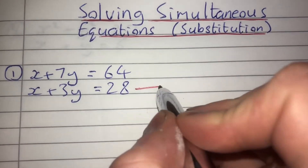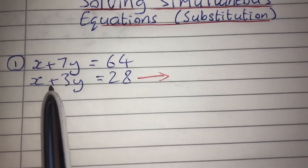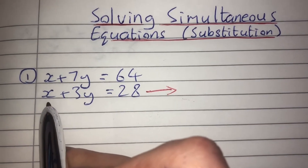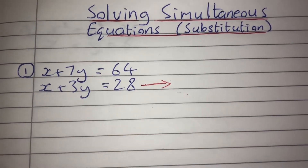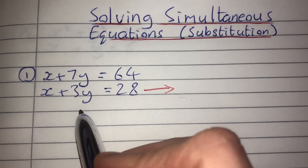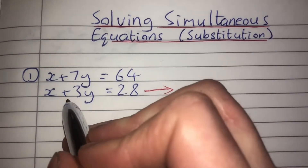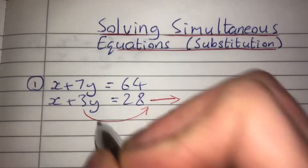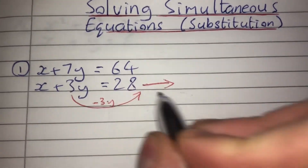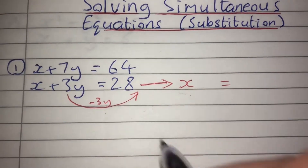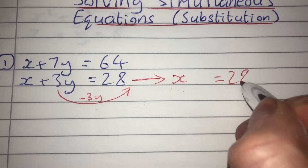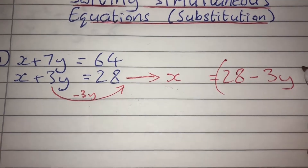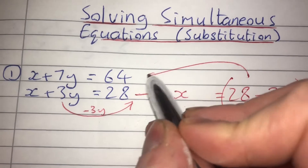When solving through substitution, we take one of the equations and make x or y the subject. I'm going to take the second equation and make x the subject because it's incredibly easy to do. If you're a little shaky on making a term the subject of an equation, there's a video you can watch to refresh your memory. I'm going to move 3y across to the right hand side, so the second equation becomes x equals 28 minus 3y.